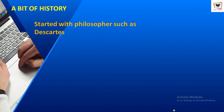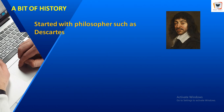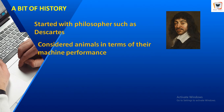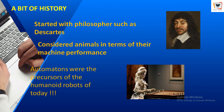There is a strong link between the development of computers and the emergence of AI. However, the seeds of AI were sown long before the development of modern computers. Philosophers such as Descartes considered animals in terms of their machine performance. Automatons were the precursors of the humanoid robots of today — an automaton is a self-operating machine designed to automatically follow a predicted sequence of operations. Here we can see a 200-year-old robot that can play music.